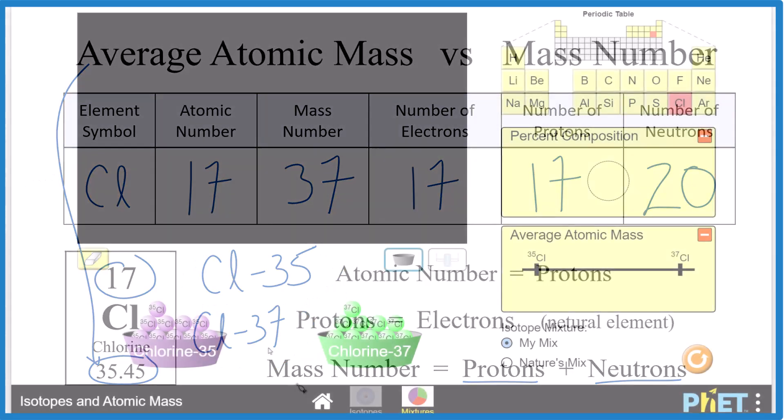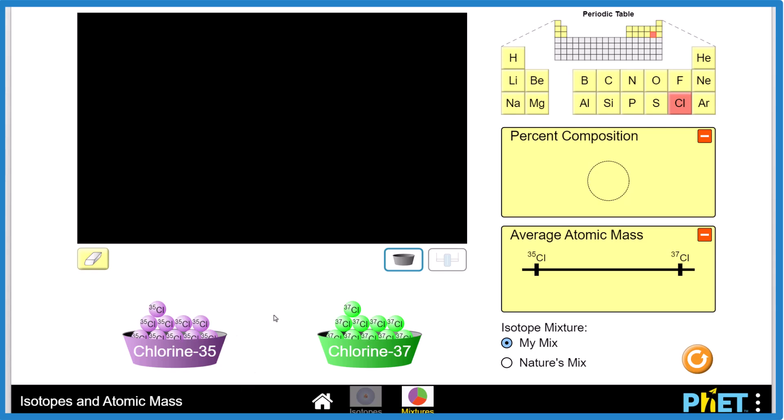Let's take a look at that. So the link for this app is in the description here. What we're going to do is look at chlorine. Here's chlorine-35, mass number 35. So we're looking at one atom here. And here's chlorine-37. Looking at one atom, the isotopes of chlorine.